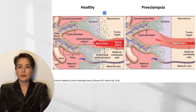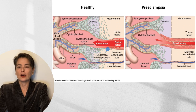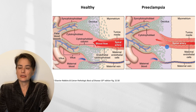In the healthy placenta, we have our fetal blood vessels lined with cytotrophoblast. The cytotrophoblast invades into the decidualized tissue and into the myometrium along the spiral arteries, helping to keep them open and allowing strong blood flow to the placenta. In preeclampsia, the cytotrophoblast only invades a short distance into the decidualized tissue, so the spiral arteries are not opened up, leading to hypoxia.